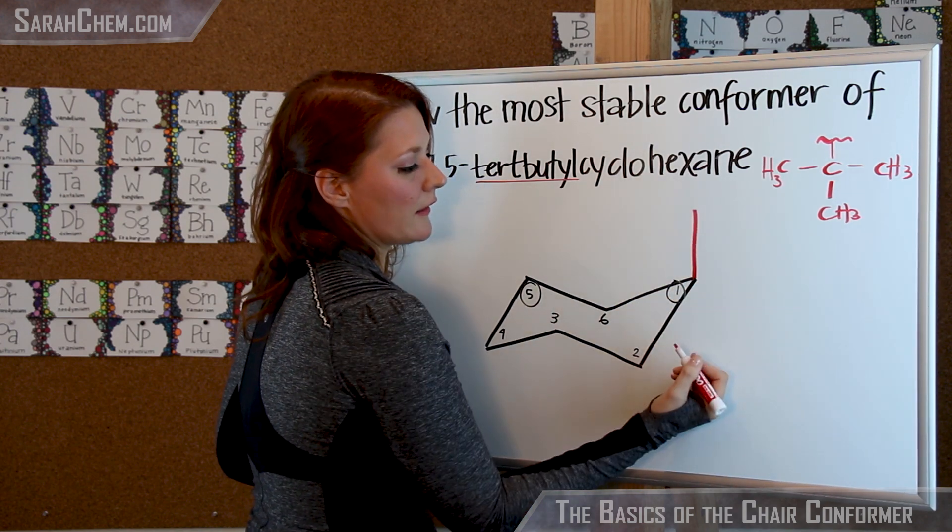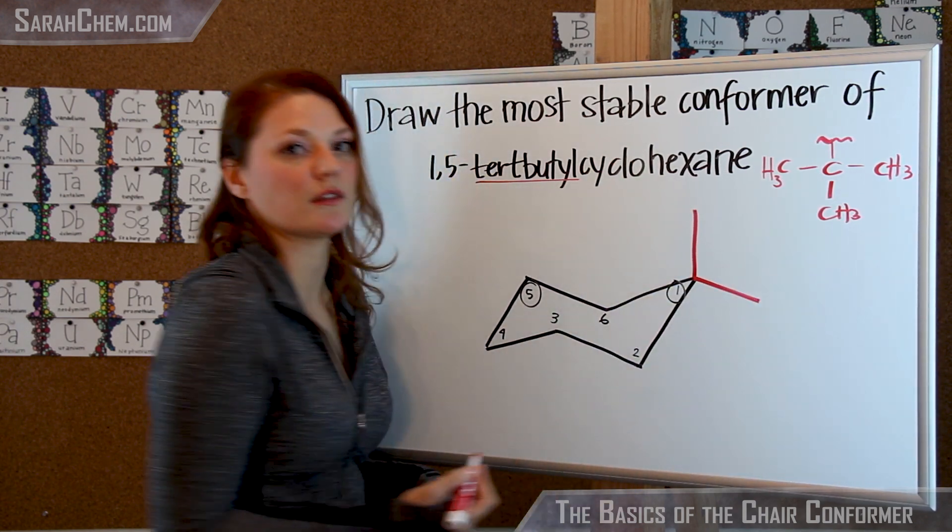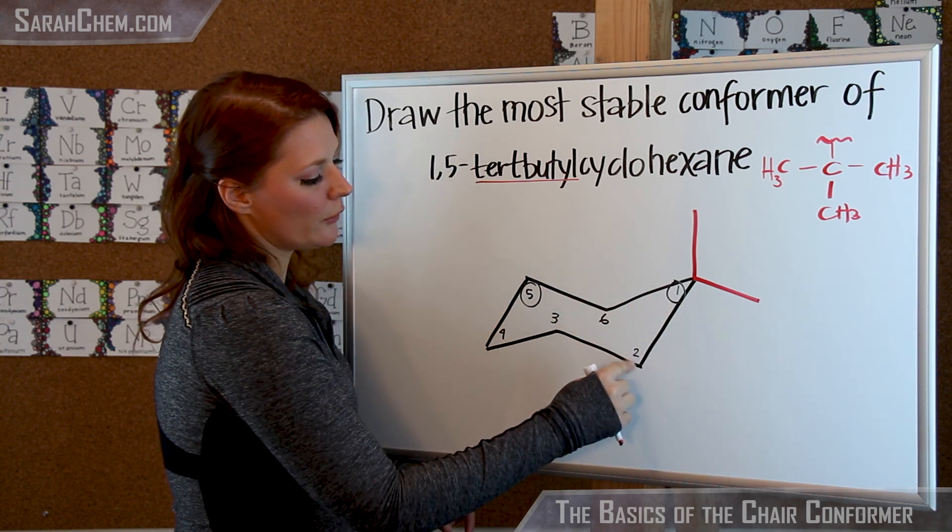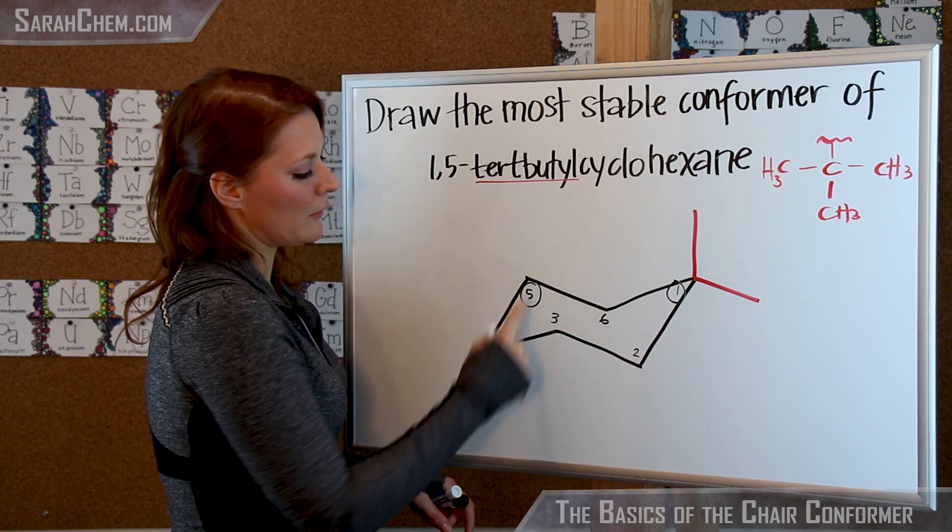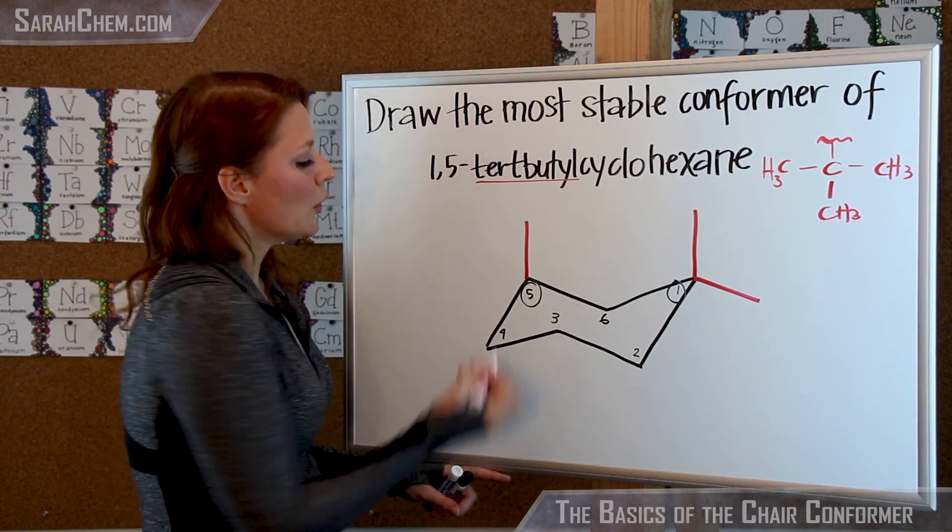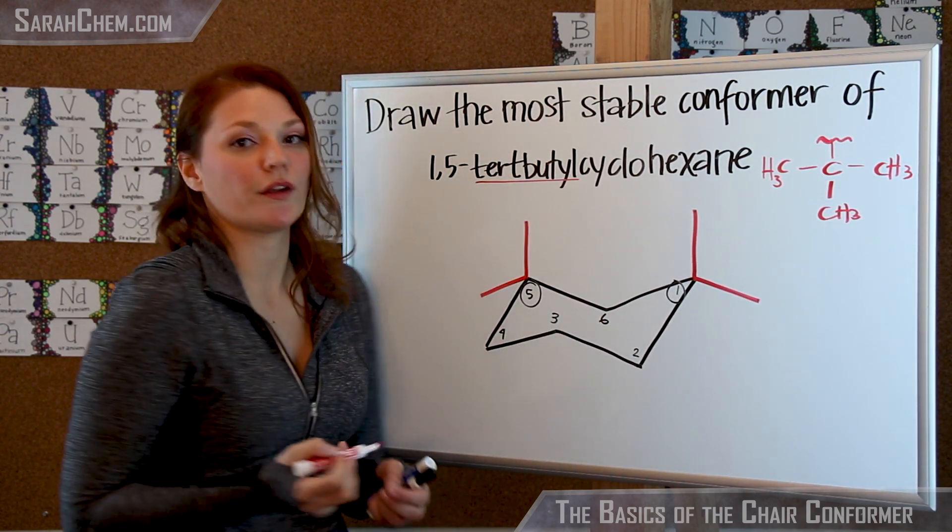we know that that is axial up, so then it would be equatorial down. And if we moved around, we know that it's alternating, so on 2 it would be down for the axial, 3 would be up, 4 down, and 5 would also be up-axial, which means it also would have an equatorial down.